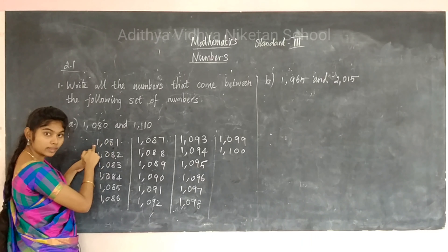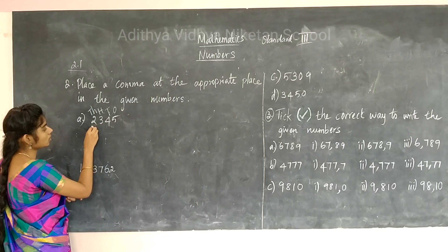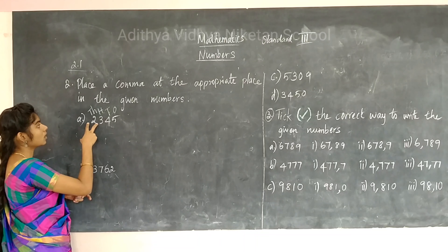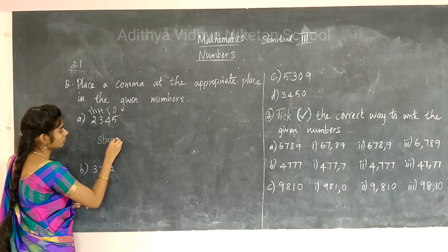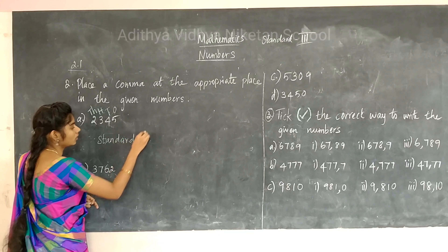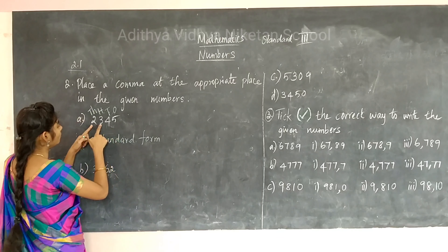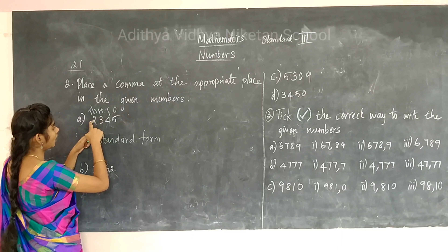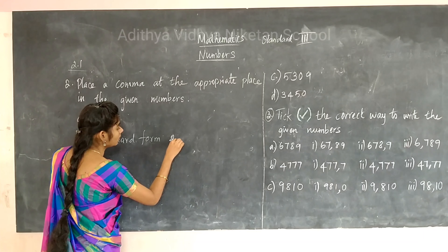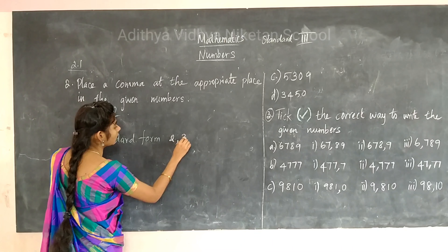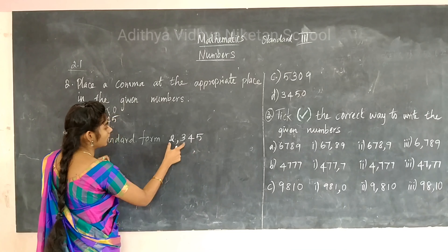Where should we place the comma? In between hundreds and thousands. We are going to write numbers in standard form. The standard form uses a comma. For example, you should write 2,000 — comma — then 345, making it 2,345. That is how you place the comma.